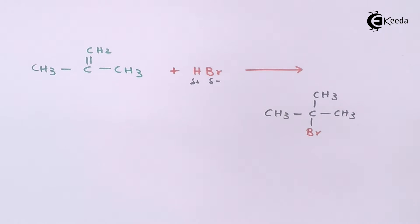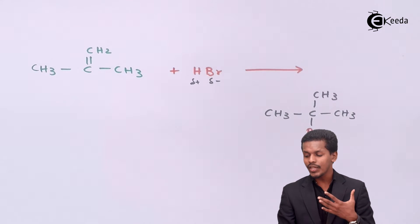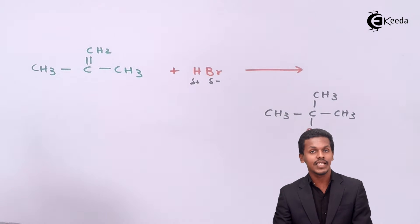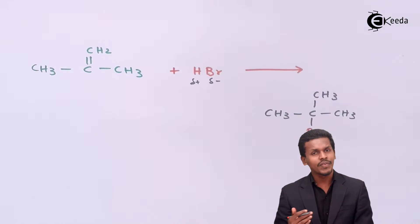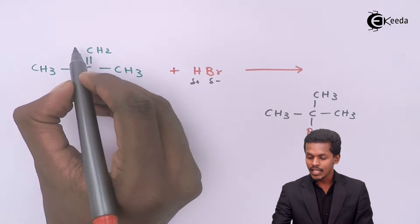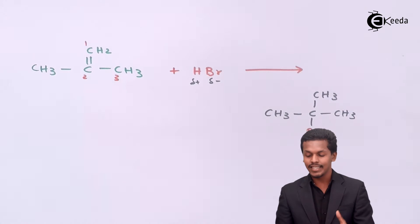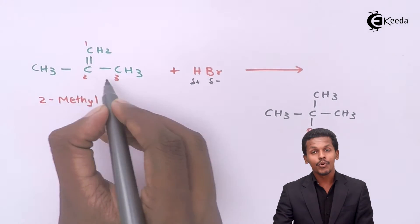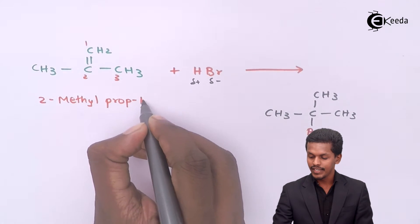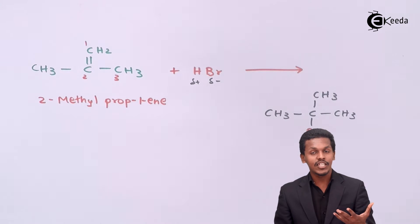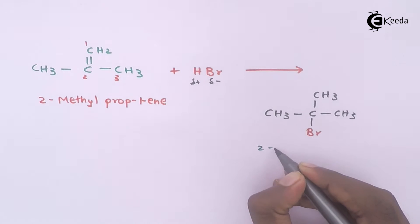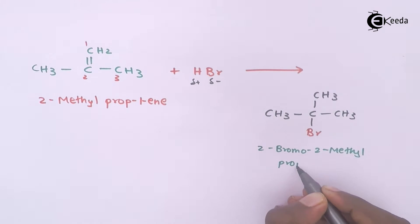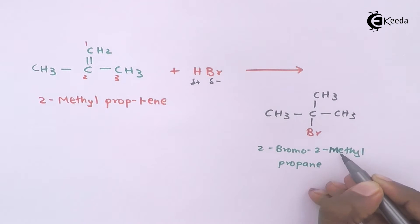In the exam, they might ask how to prepare 2-bromo-2-methylpropane using a particular alkene. For IUPAC nomenclature, we set the longest chain containing the carbon-carbon double bond. This is carbon 1, carbon 2, and carbon 3, giving us 2-methylpropene. So whenever 2-methylpropene is treated with HBr, the major product formed is 2-bromo-2-methylpropane. That is what Markovnikov's rule gives us when an unsymmetrical reagent is treated with an unsymmetrical alkene.